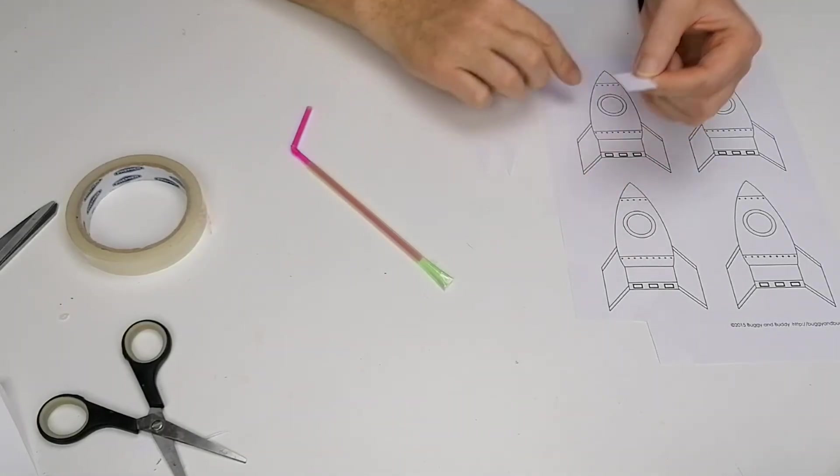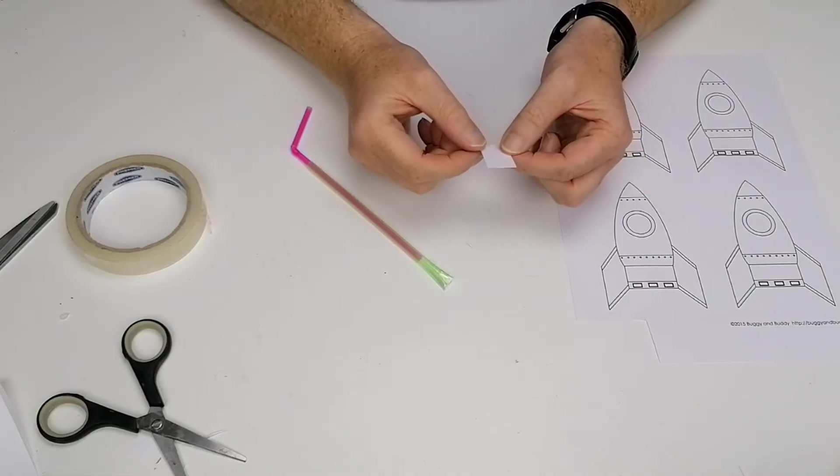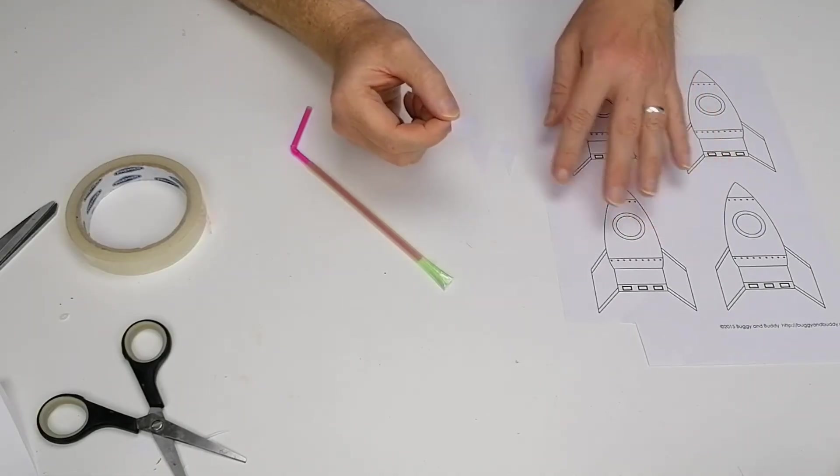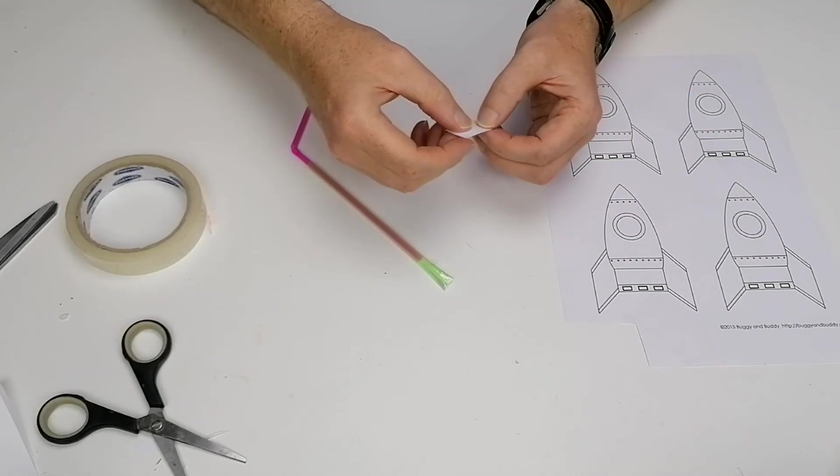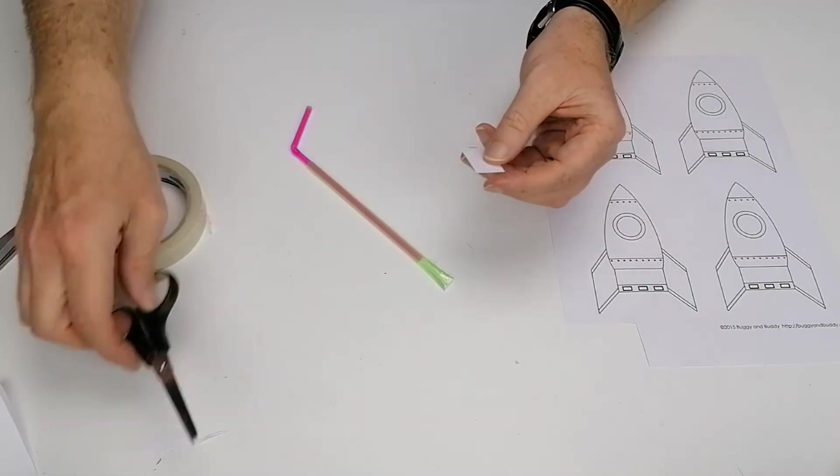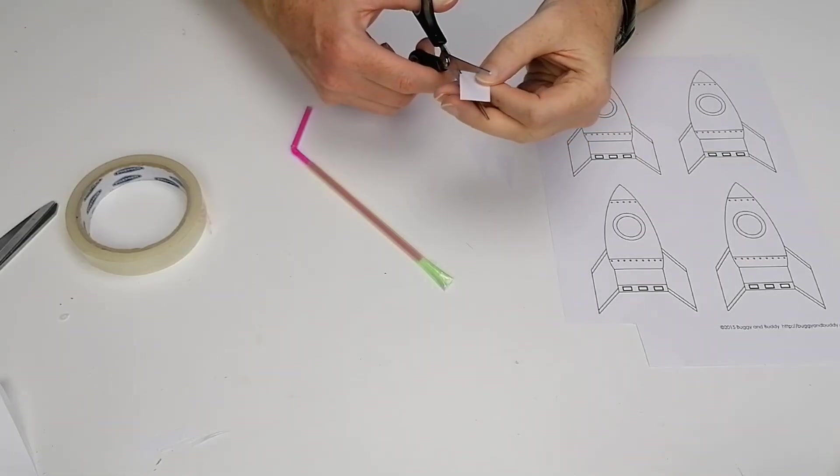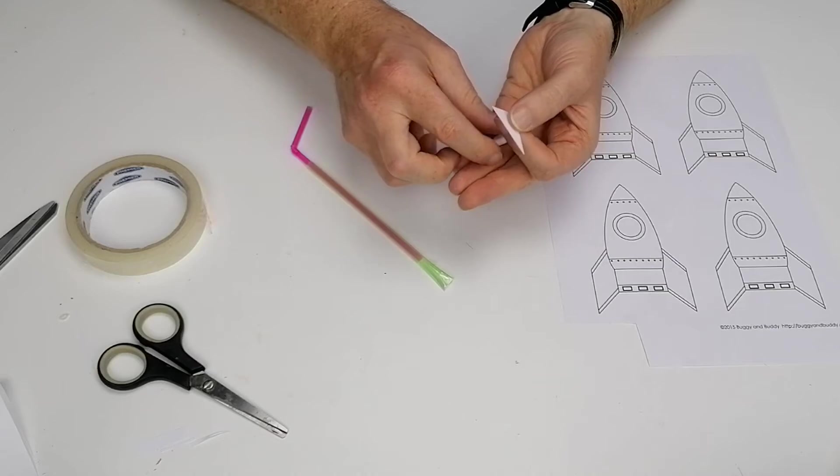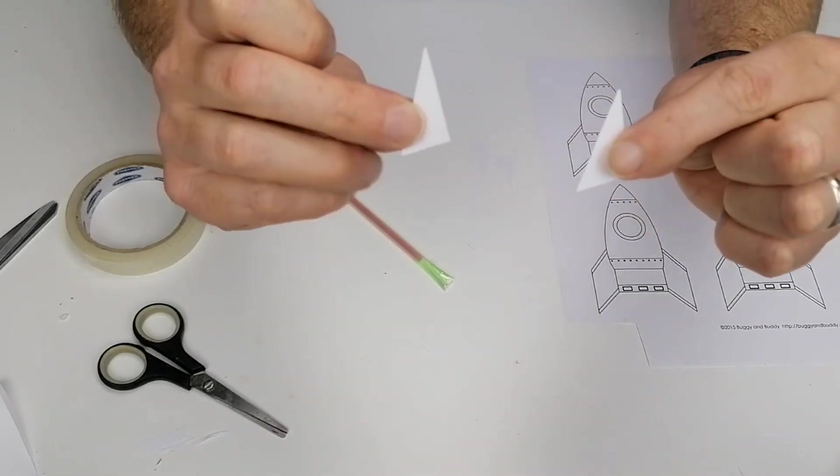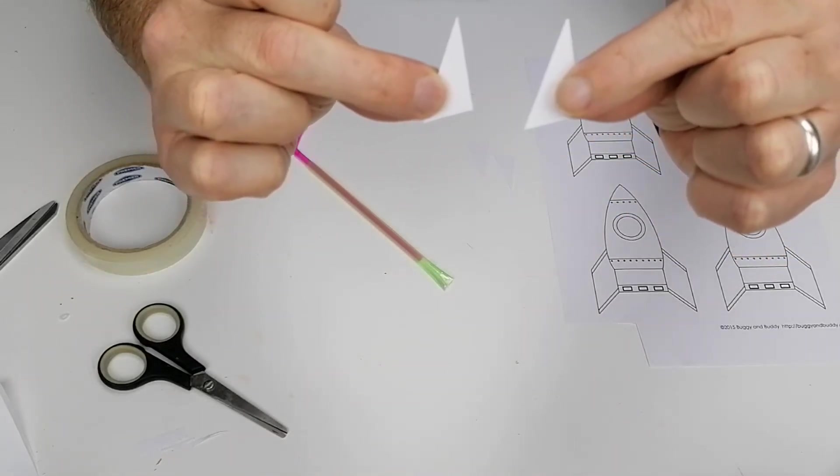So to make the fins, all I've done is I've taken a little piece of paper off the corner of the rocket template. I've taken a piece and it's in a rectangle, a small piece like that. And then I'm going to cut from one diagonal of the rectangle to the other, and that will make two fins for you. So there's the size of fins that I'm going to start off with. You can make any size fin you like.